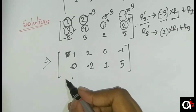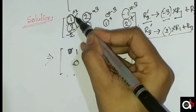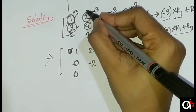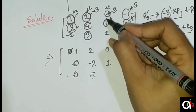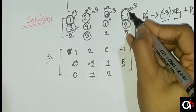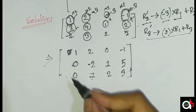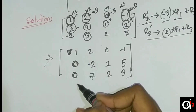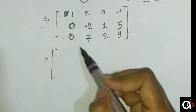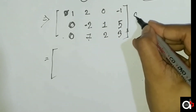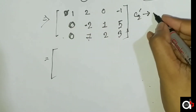1 into 2 plus minus 2 is 0. 2 into 2 plus 3 is 7. 0 into 2 plus 2 is 2. Minus 1 into 2 is minus 2, plus 5 is 3. 1 into 2 minus 2 is 0.